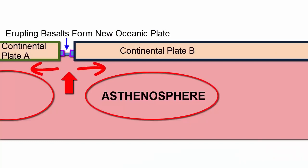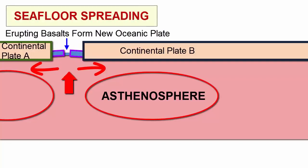dense basaltic magmas erupted, and the new plate that formed was oceanic, producing oceanic plate fused to broken halves of continental plate, now moving away from each other. Through this process, new oceans form and spread. We call this seafloor spreading.